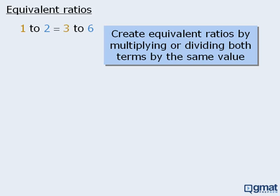We can create equivalent ratios by multiplying or dividing both terms by the same value. For example, if we take the ratio two to seven and multiply both terms by two, we get the equivalent ratio four to 14. Similarly, if we take the ratio three to four and multiply both terms by five, we get the equivalent ratio 15 to 20.